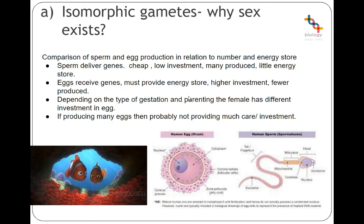Parental investment is how much an individual puts in energy and effort. There's a term 'anisogamy' — males and females have very different gametes. The male is characterised as the organism with small gametes, which are cheap, low investment, and produced in large numbers, and don't contain a very large energy store. The female has the larger gamete which, following fertilisation — fusion of the male nucleus into her gamete — provides the energy store. She has a higher investment than the male.